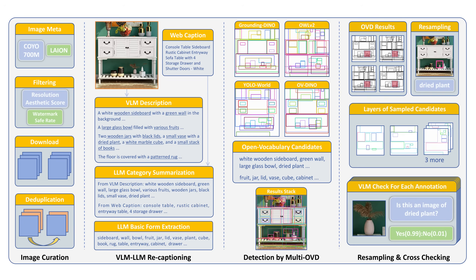Our pipeline has four stages. First, image curation: we filter billions of web images for high-resolution and aesthetic quality, obtaining 1 million curated images. Second, VLM-LLM recaptioning — our key innovation. A vision language model generates detailed descriptions of each image, then a large language model extracts a comprehensive category list, enabling more complete detection. Third, multi-OVD detection: we use four open vocabulary detectors to maximize category coverage, then resample to balance quality and density.